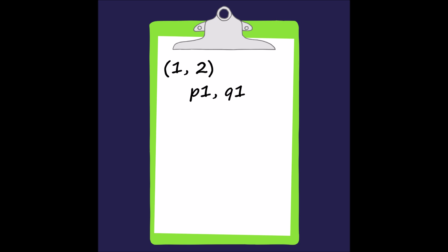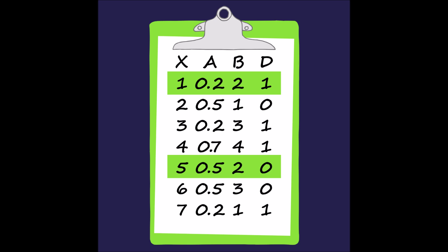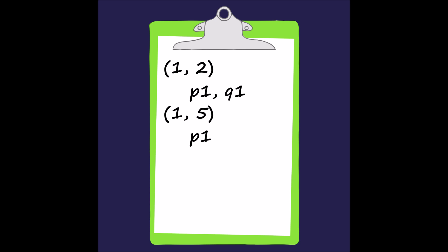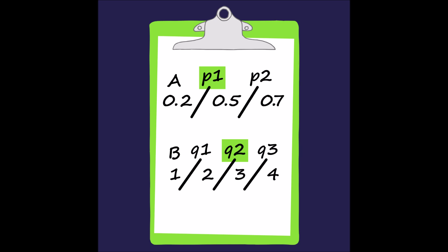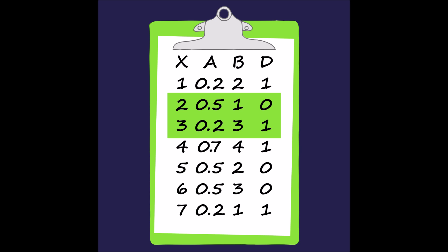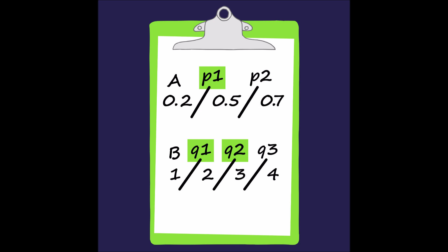Once we have listed all of the necessary splits, we can use them to create a discernibility formula. Tuple 1 has the same decision feature as tuples 3 and 4, so we do not need to keep them distinct. To keep tuples 1 and 5 distinct, split P1 needs to be present. For tuples 1 and 6, we need splits on either P1 or Q2. We do not need to compare tuples 1 and 7. For tuples 2 and 3, we can use P1 or Q1 or Q2 — any of those three will work.